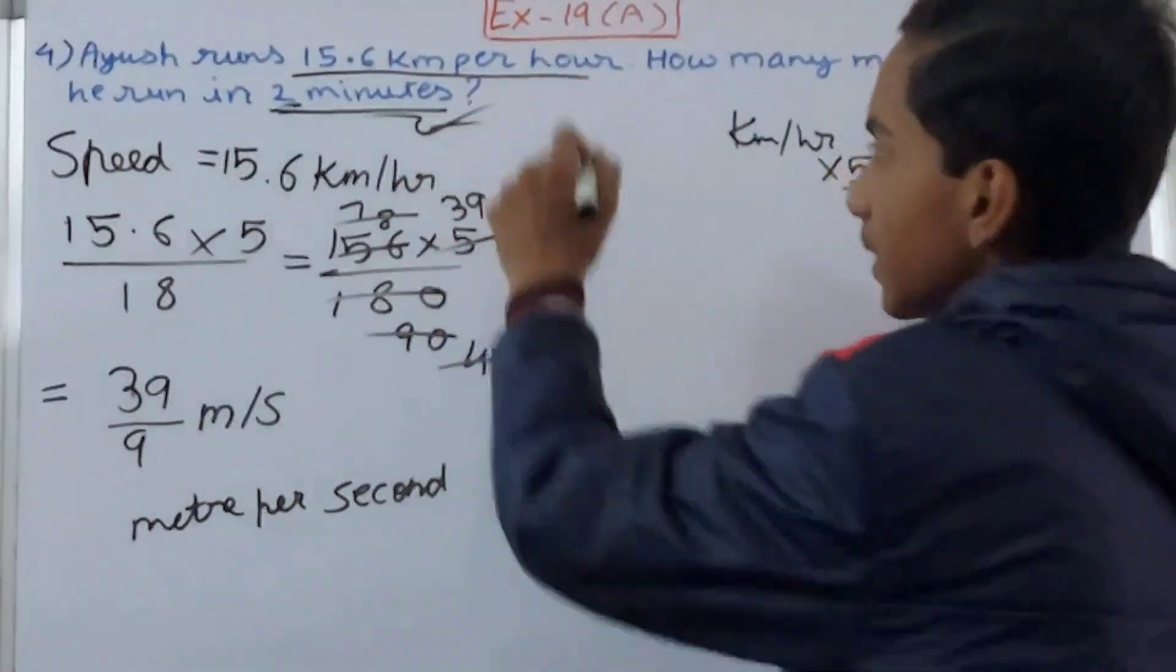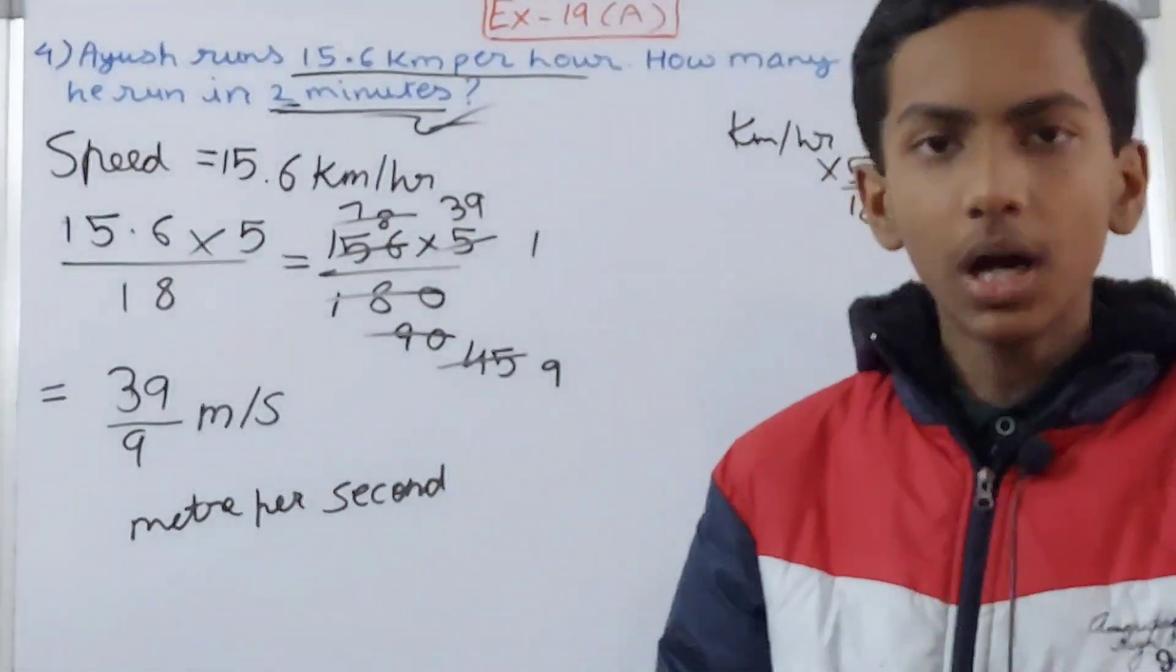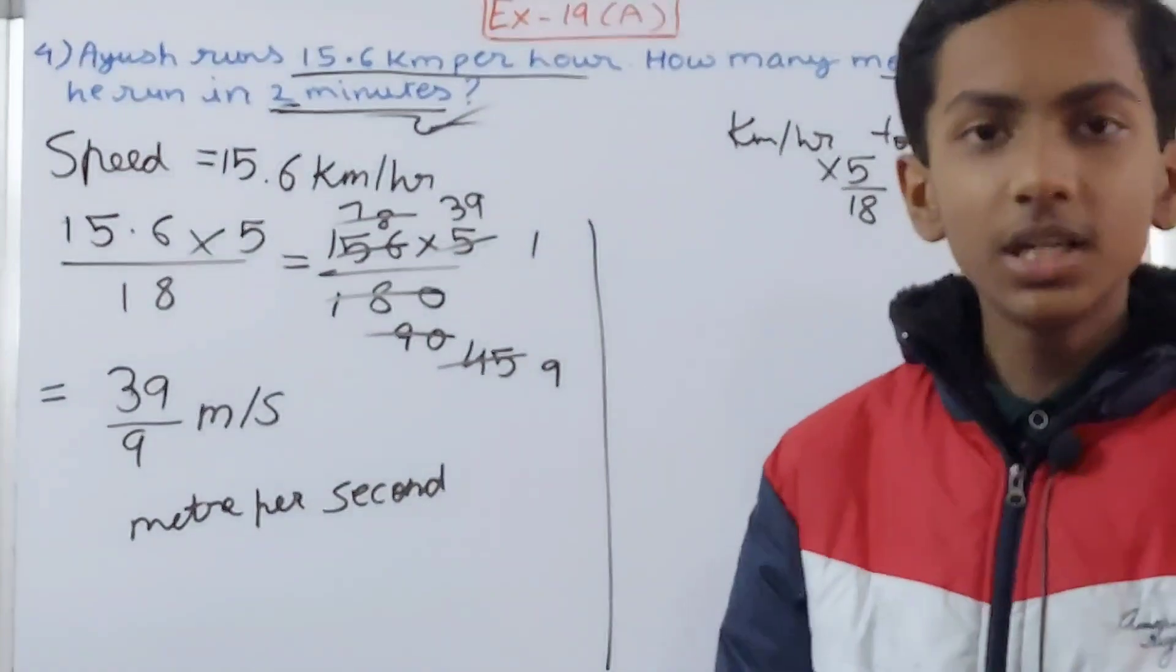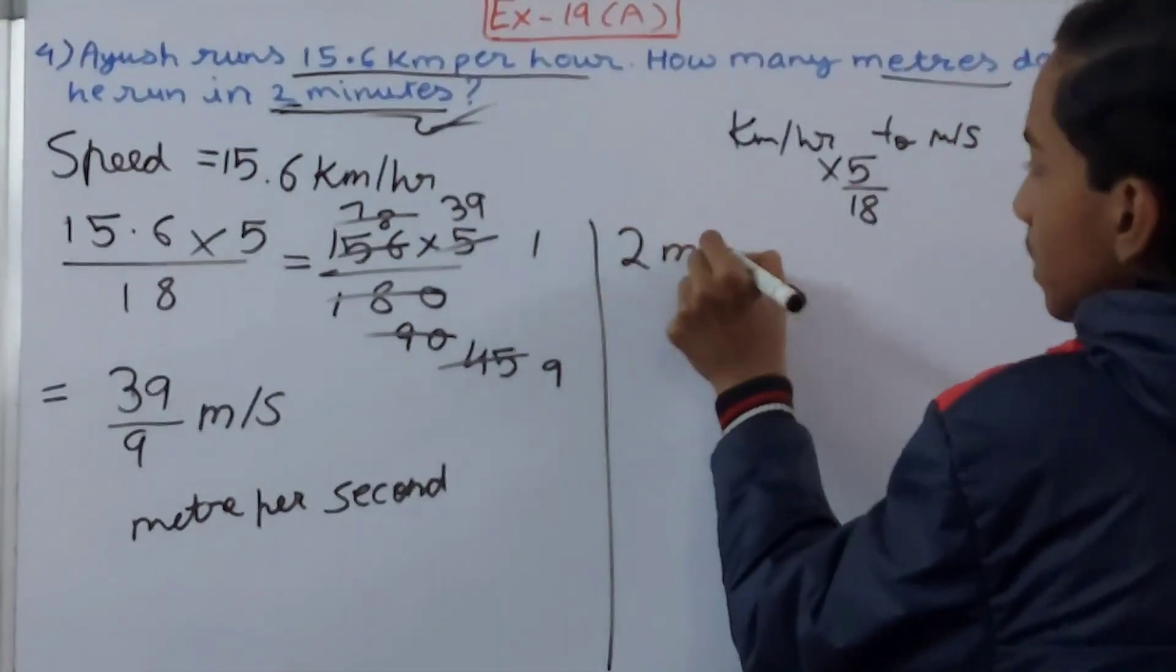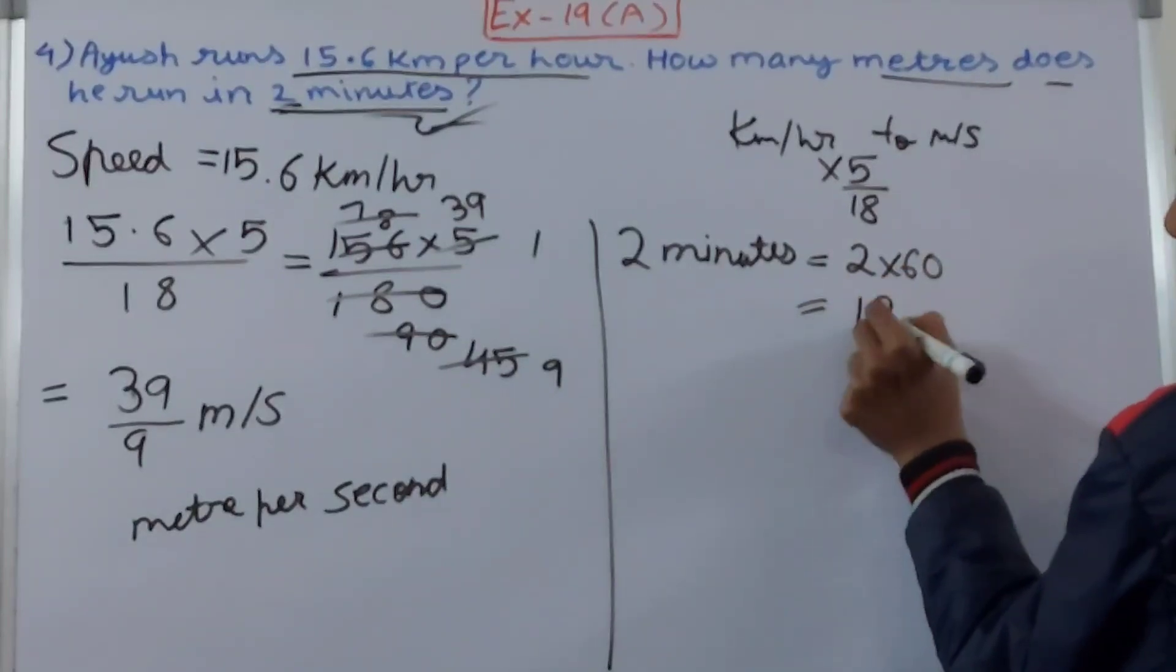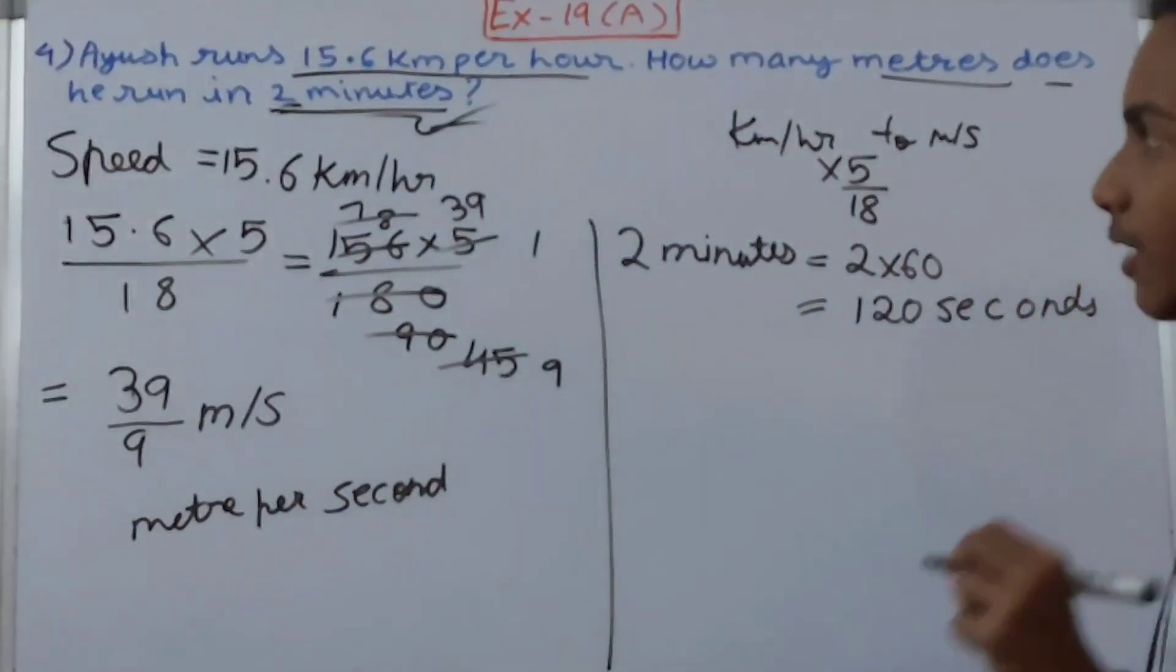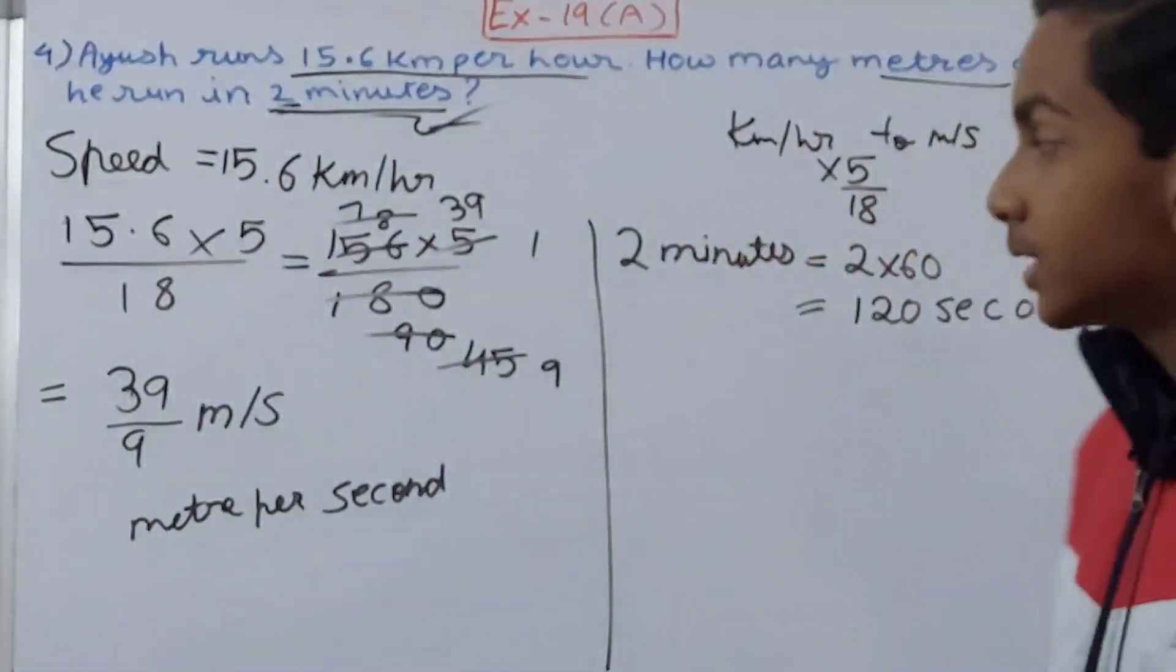So it's quite simple. Two minutes is what? Convert two minutes into seconds. See here that two minutes will be converted into seconds, and that becomes 2 into 60. So this will become 120 seconds. We all know if in one minute there are 60 seconds, so in two minutes it will be 120 seconds.